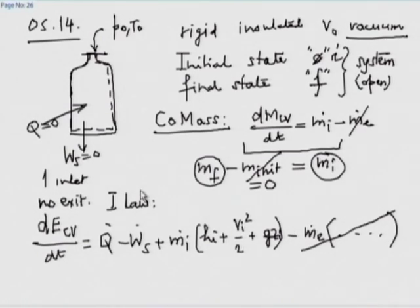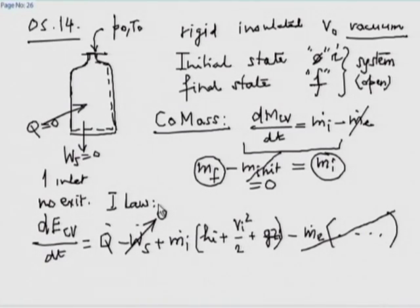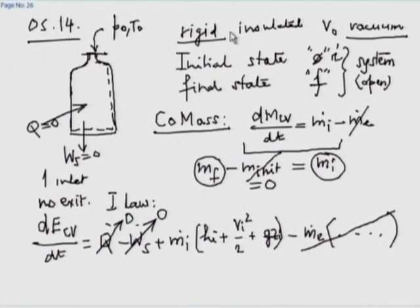Before integrating, let us simplify. It is a rigid bottle, so all work done would be flow work included in enthalpy; shaft work Ws is zero because it cannot expand or contract, and there is no stirrer. It is insulated, so Q is also zero. The assumptions of rigid and insulated are invoked here.